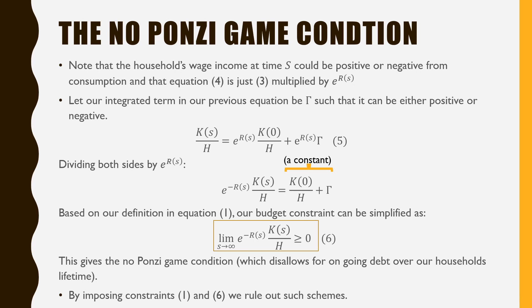Dividing both sides by e^(R(s)), we get e^(-R(s)) times the capital stock per household at time s. Based on our budget constraint, the limit as s approaches infinity of e^(-R(s)) times K(s)/H must be greater than or equal to zero.